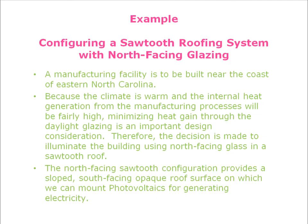Now we want to construct a sawtooth roof to meet standards for structure and lighting uniformity. The example is configuring a sawtooth roofing system with north-facing glazing for a manufacturing facility to be built near the coast of eastern North Carolina. The climate is warm and internal heat generation from manufacturing processes will be fairly high, so we want to minimize heat gain through daylight glazing. The decision is made to use north-facing glass. The alternative of south-facing with an overhang would have overheated during swing months given the warm climate and high internal heat gains.